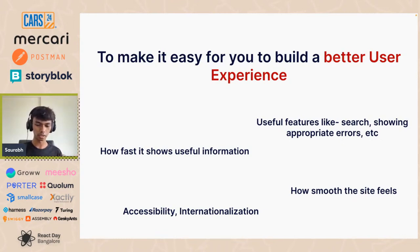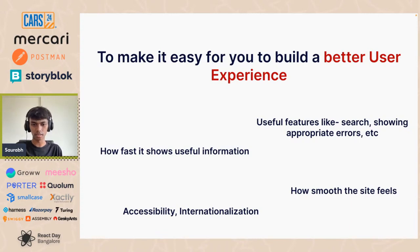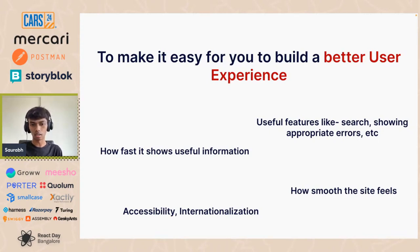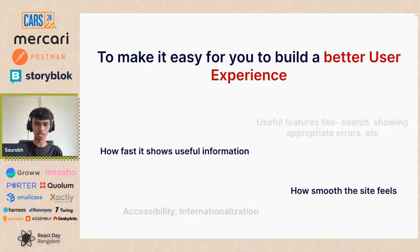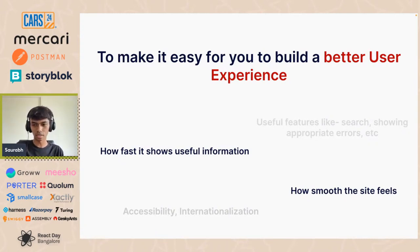Since this talk is about frontend frameworks, product features like search or showing errors lie on the consumer's end. Accessibility can be partly a framework concern — for example, announcing route changes. But what we'll focus on today are these two things: how fast the site shows useful information, and how smooth the site feels — basically performance, but not just loading performance, but overall interaction performance.